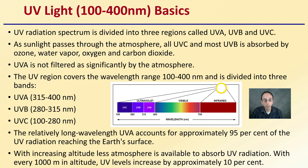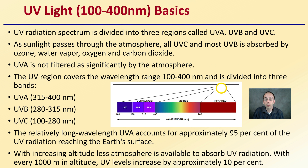With increasing altitude there is less atmosphere available to absorb UV radiation, so with every 1,000 meters in altitude, UV levels increase by approximately 10%, showing the impact that elevation or distance from sea level can have.